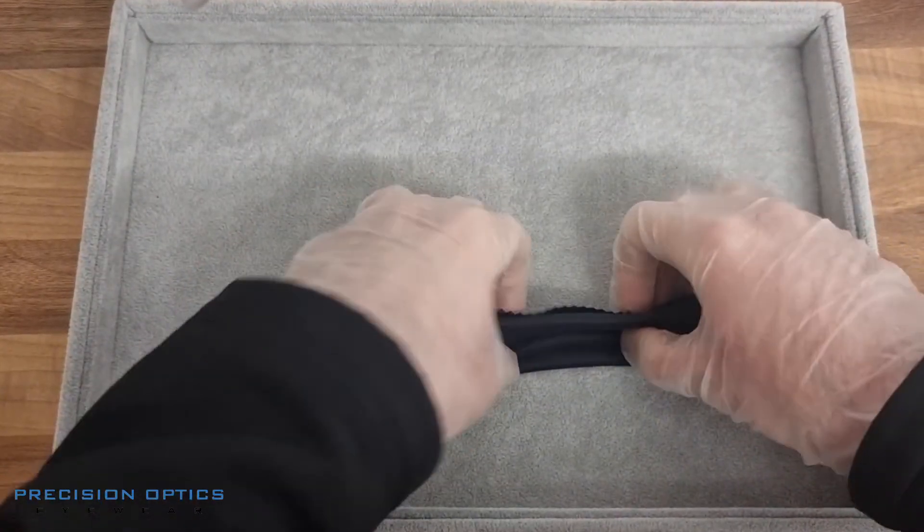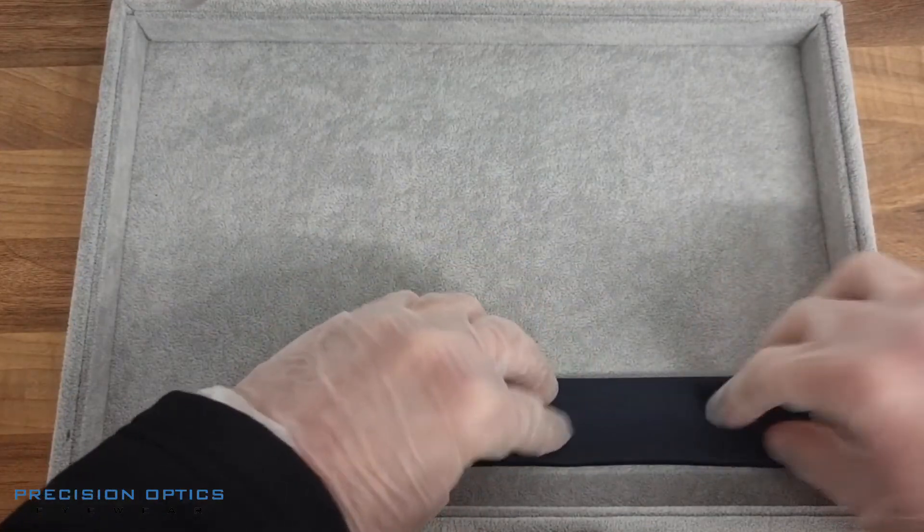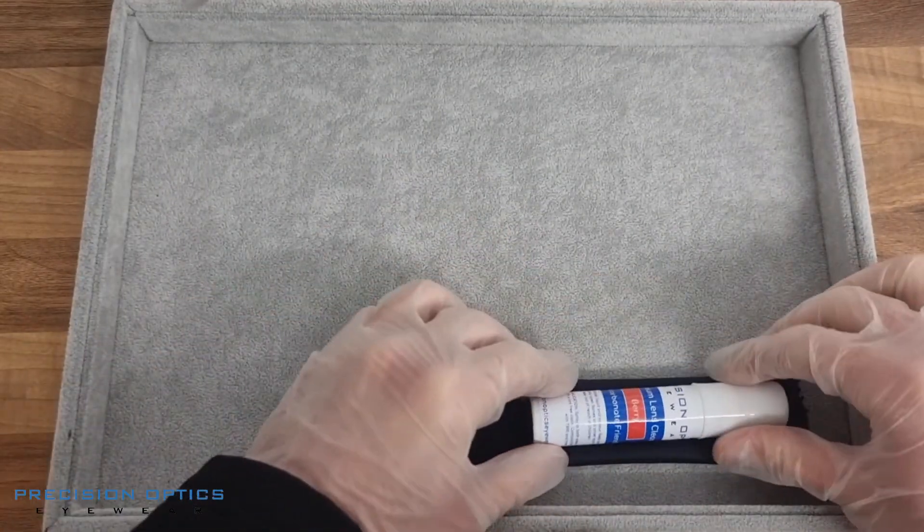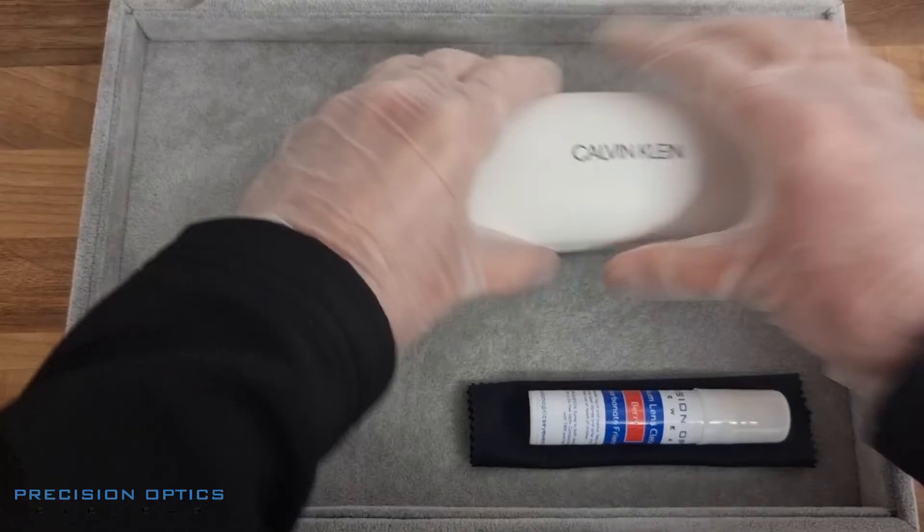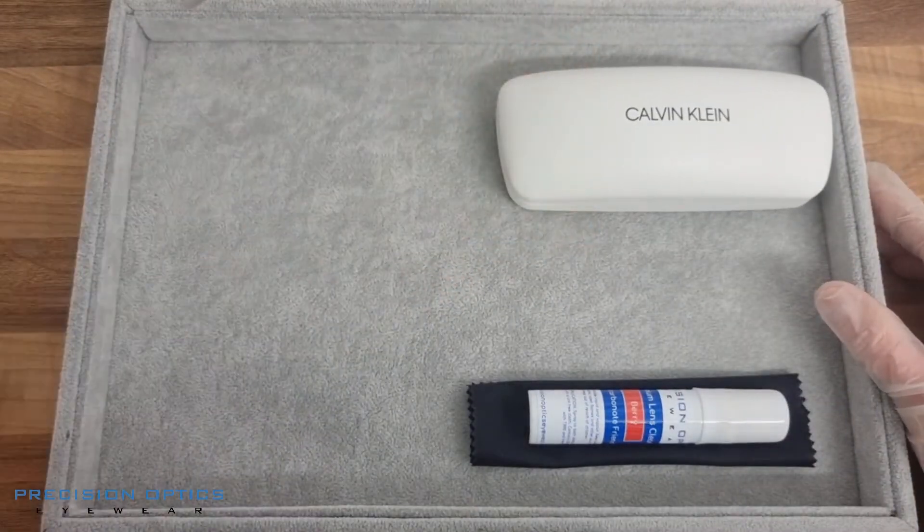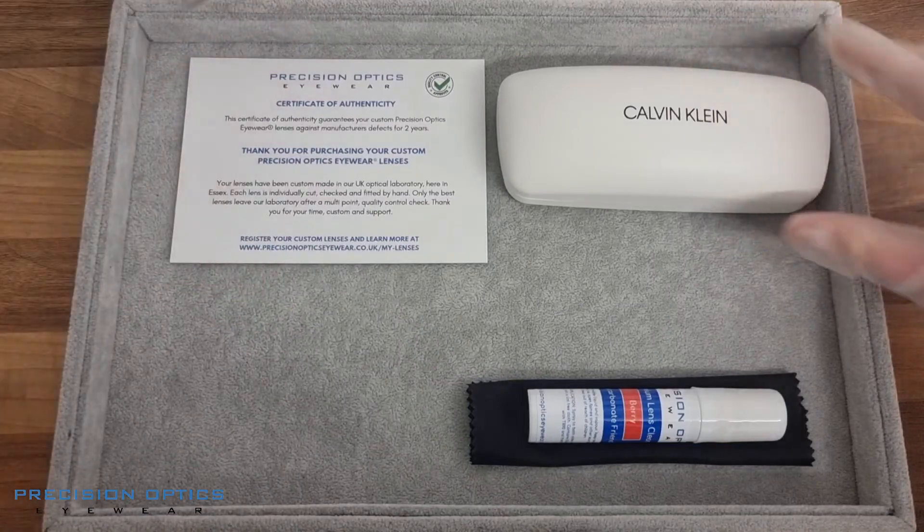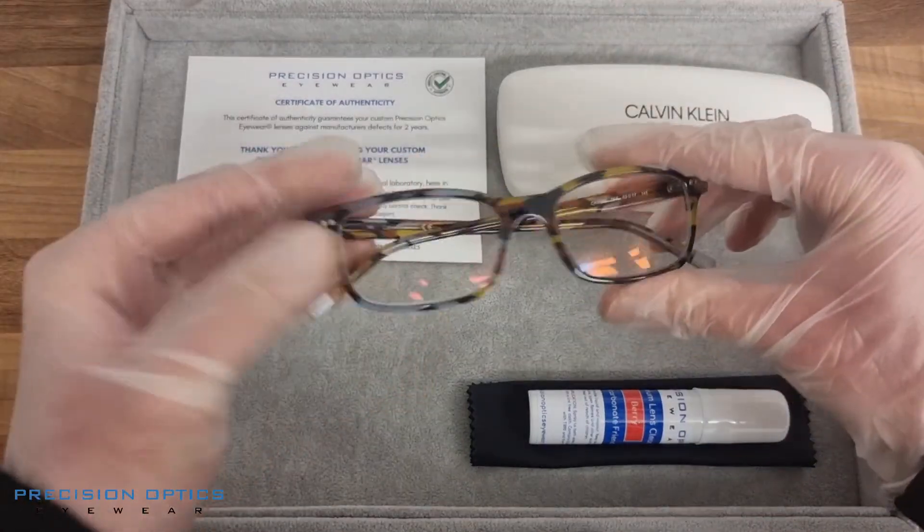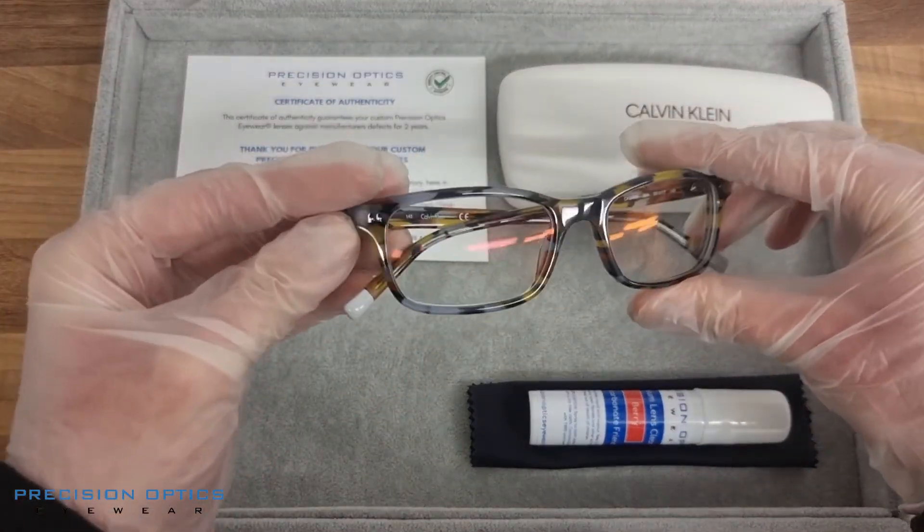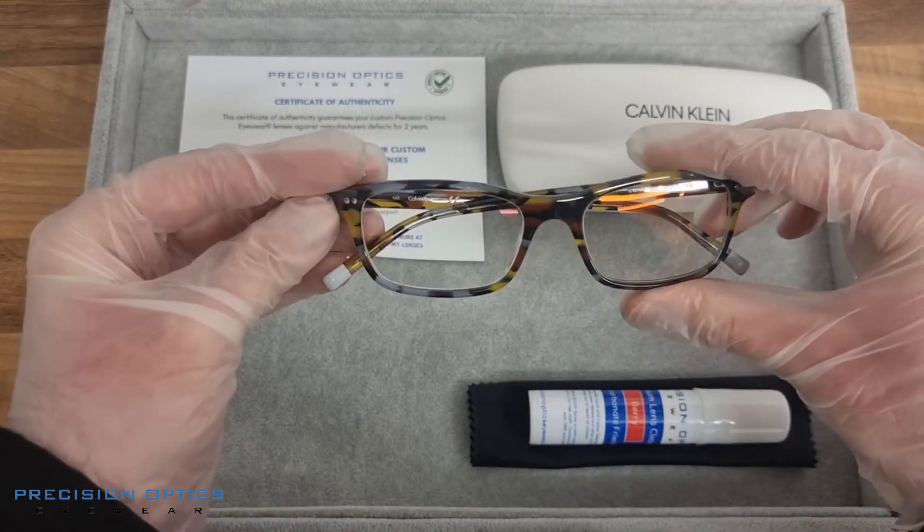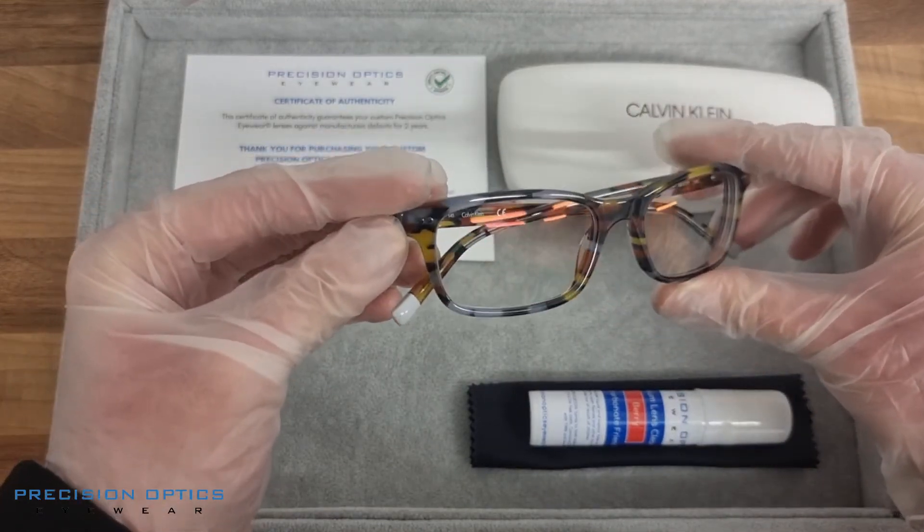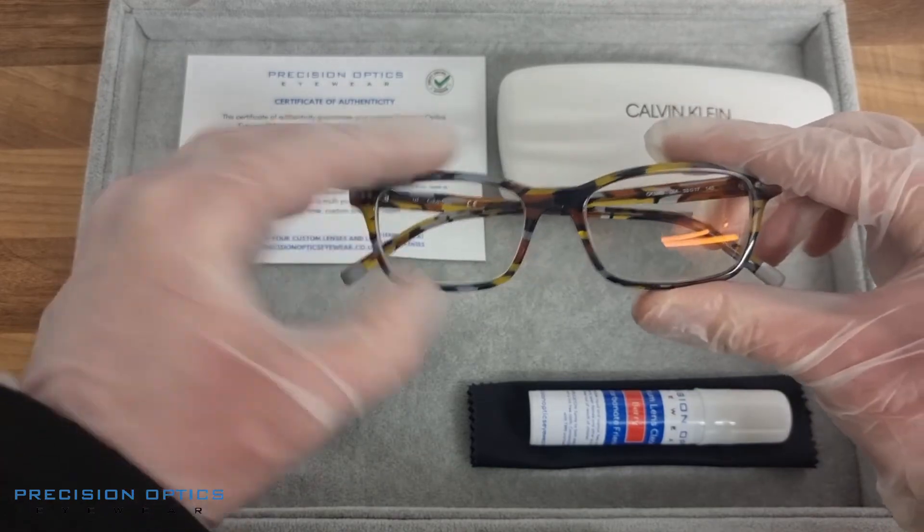So here we go, these are all done. If there's any questions you've got at all about any of the lenses or the coatings I've been using today, ask me in the comments below. I'll be more than happy to answer and help out. Have a look at what's out there on the market. There's lots of great quality coatings, some are better for different things, but these driving lenses and the coatings are going to work really well for my client.